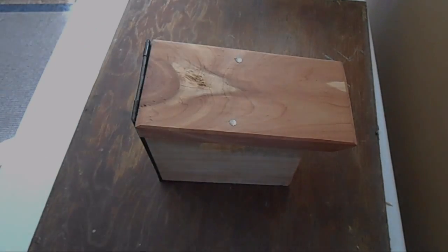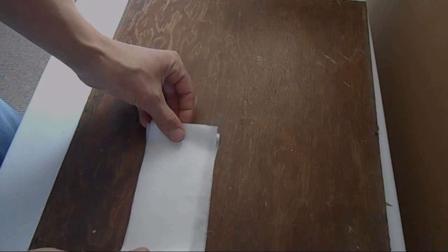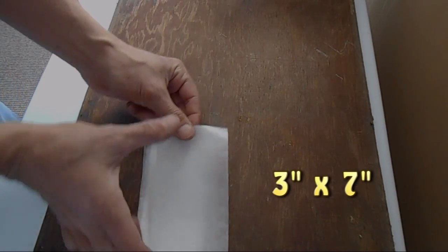Now let me show you real quick how these tubes are made. It's very simple. You use parchment paper. And I had cut a bunch of them here. Mine are 3 by 7 inches.